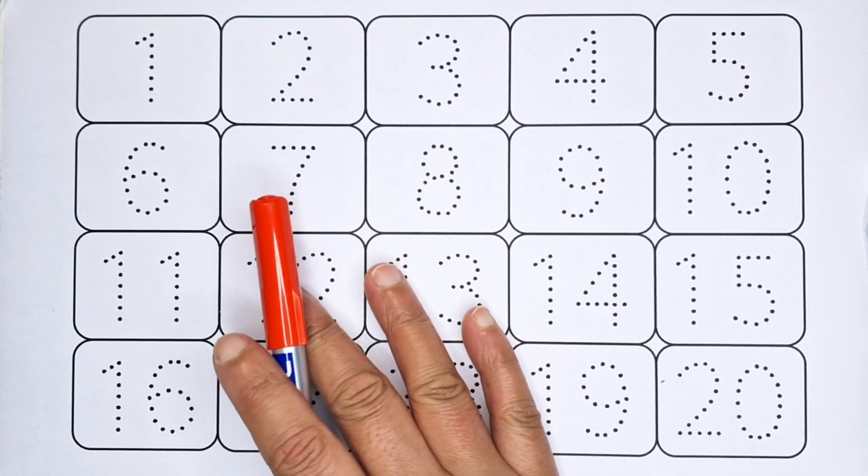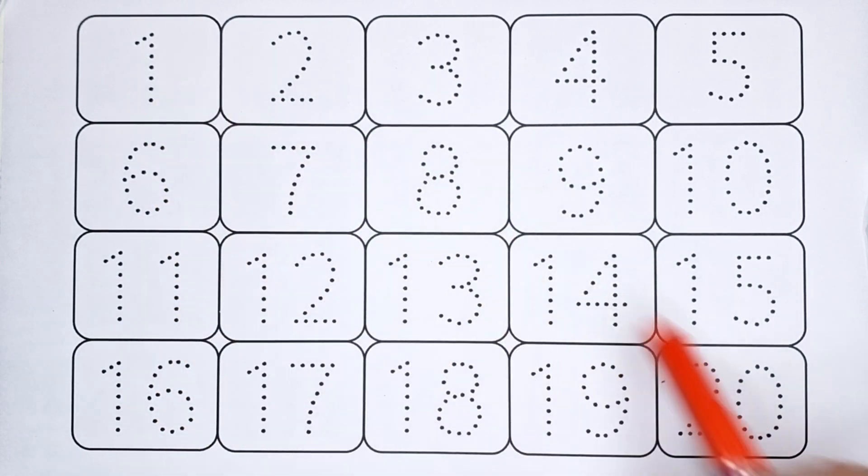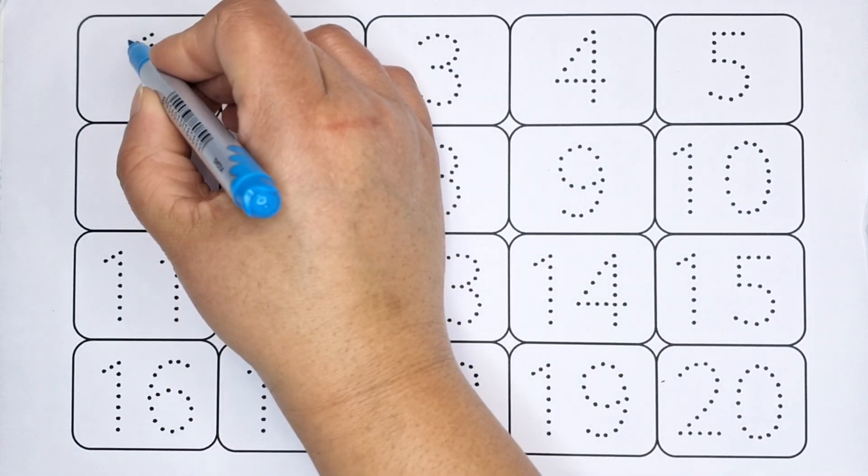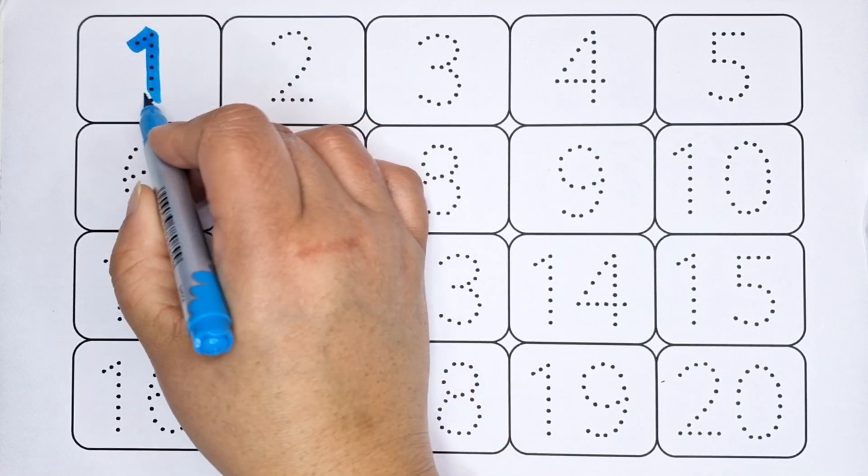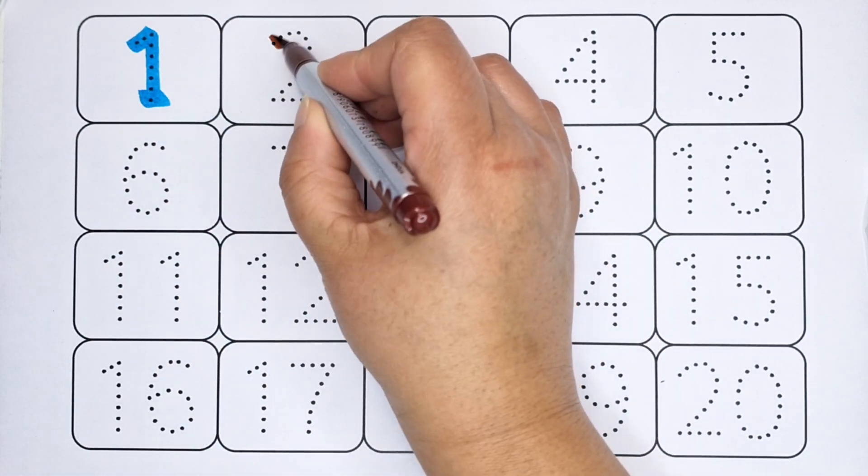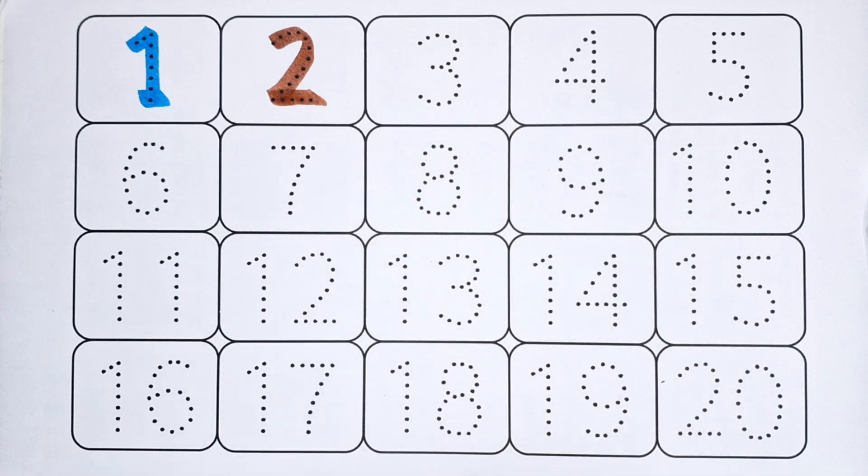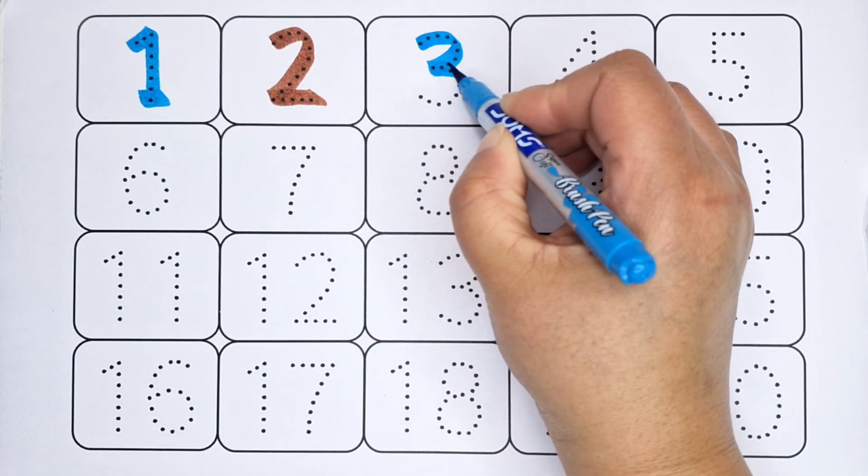Okay, let's learn counting number 1 to 20 counting. 1 number 1, 2 number 2, 3 number 3